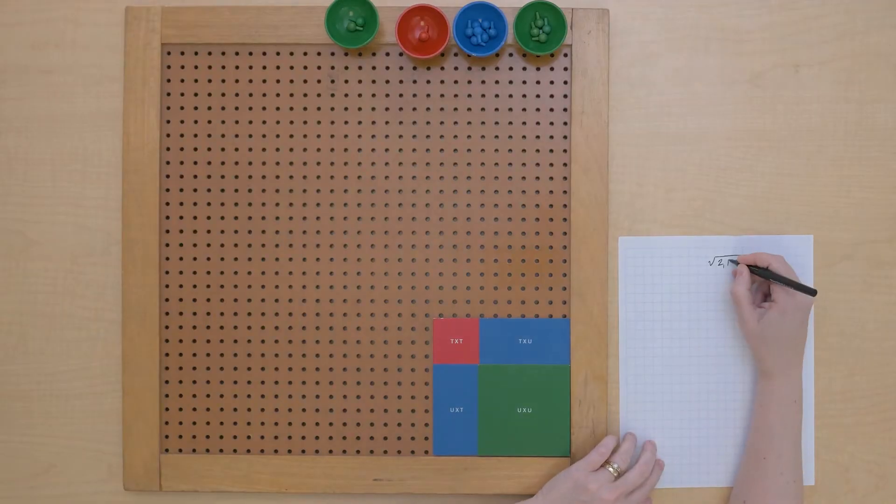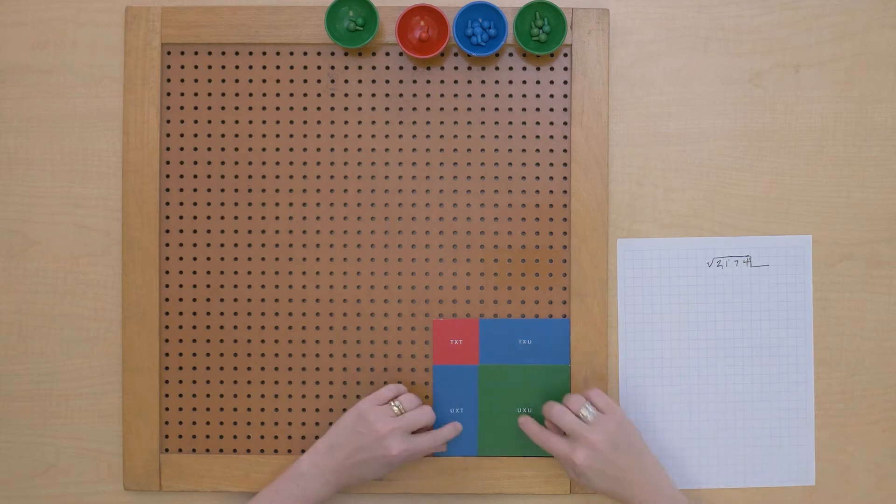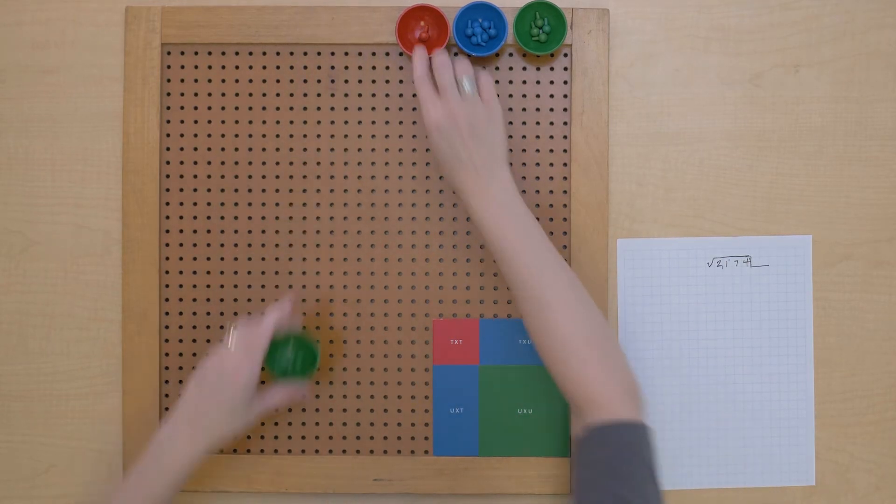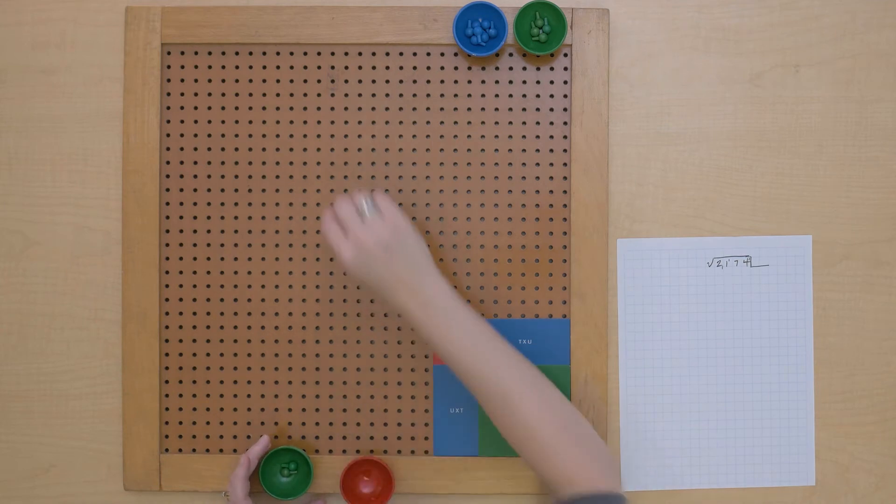Okay, let's find the square root of 2,174. I can see this is a two-digit root, so I have my binomial square here, and the first square I need to build is out of hundreds. So let's start that. Do some exchanging.